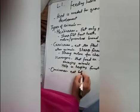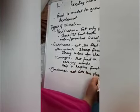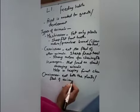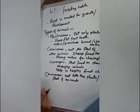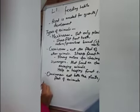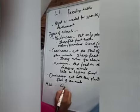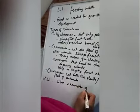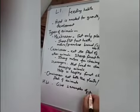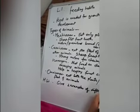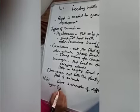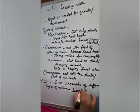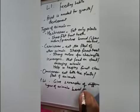Scavengers are the ones that eat both plants as well as the flesh of animals. Now the topic is over. For your homework today, you have to give the examples of all — give two examples of different types of animals based on eating habits.